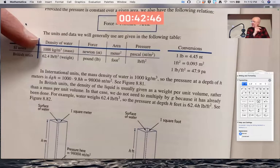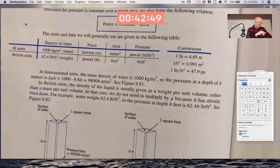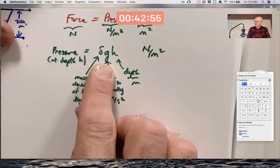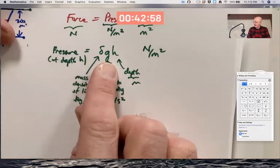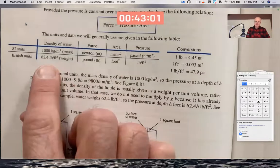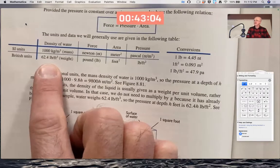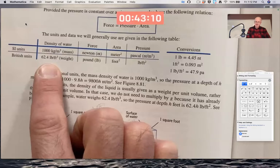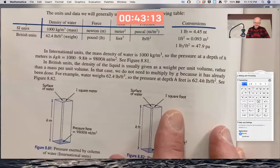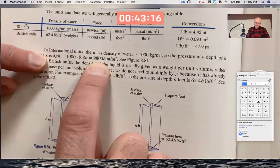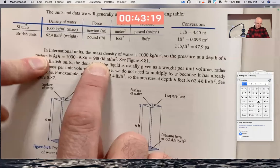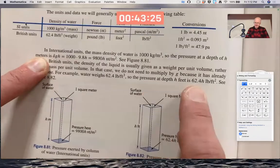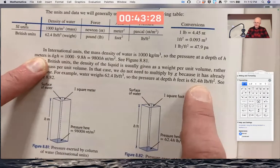So in this problem, we're using SI units. If we were using British units, we would not be given delta and G separately. We would not do 1,000 times 9.8. Instead, we'd be given the 62.4 to start with. Delta times G is 62.4. So the upshot of this is that with SI units, delta GH becomes 9,800 H newtons per square meter. And with British units, delta times G times H becomes 62.4H pounds per square foot.